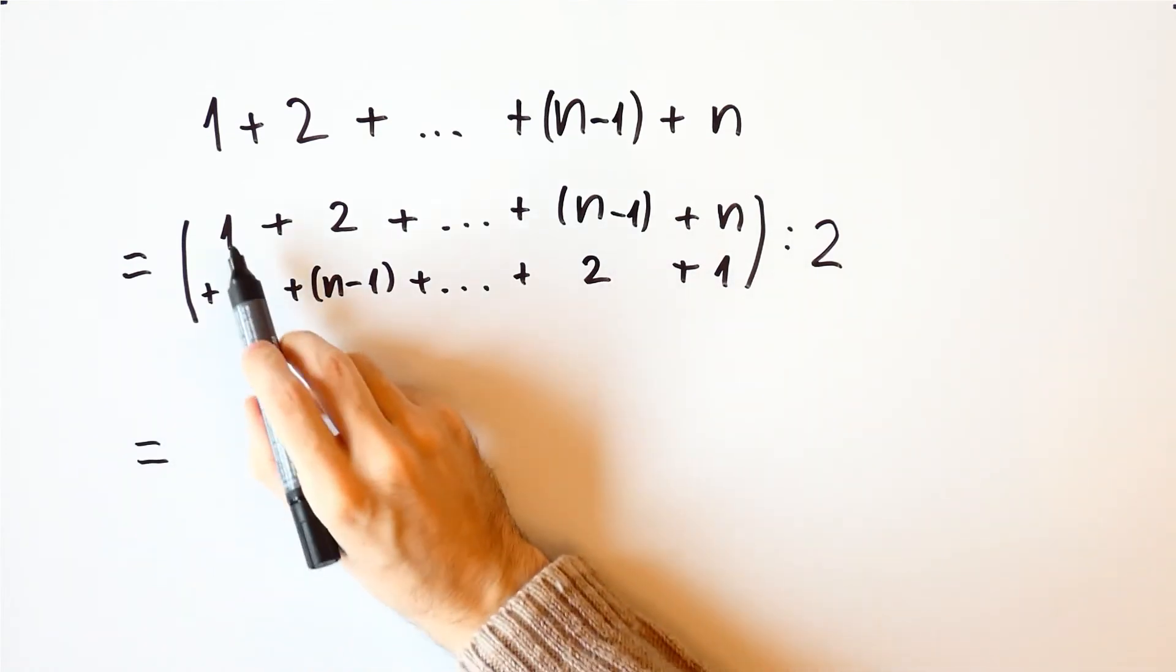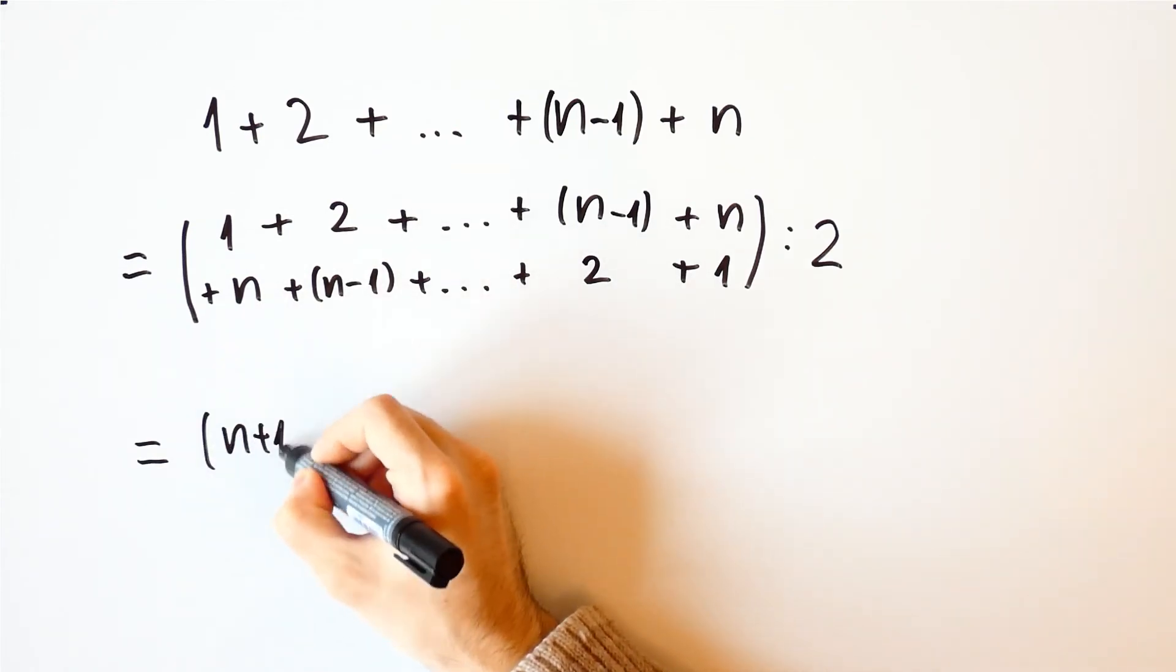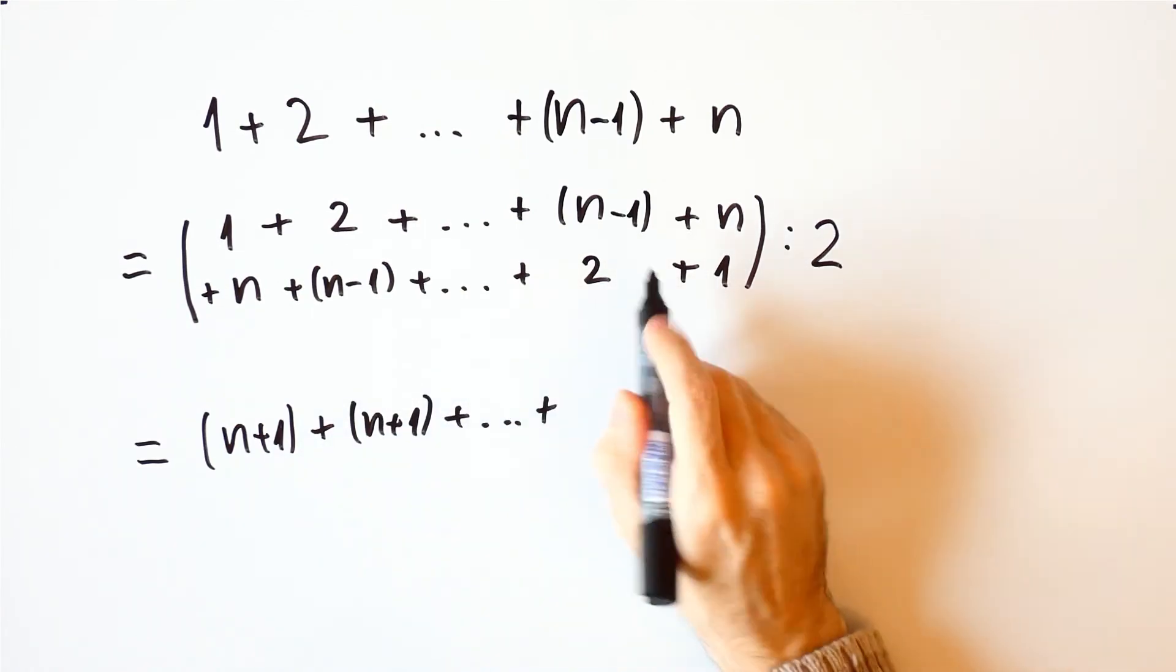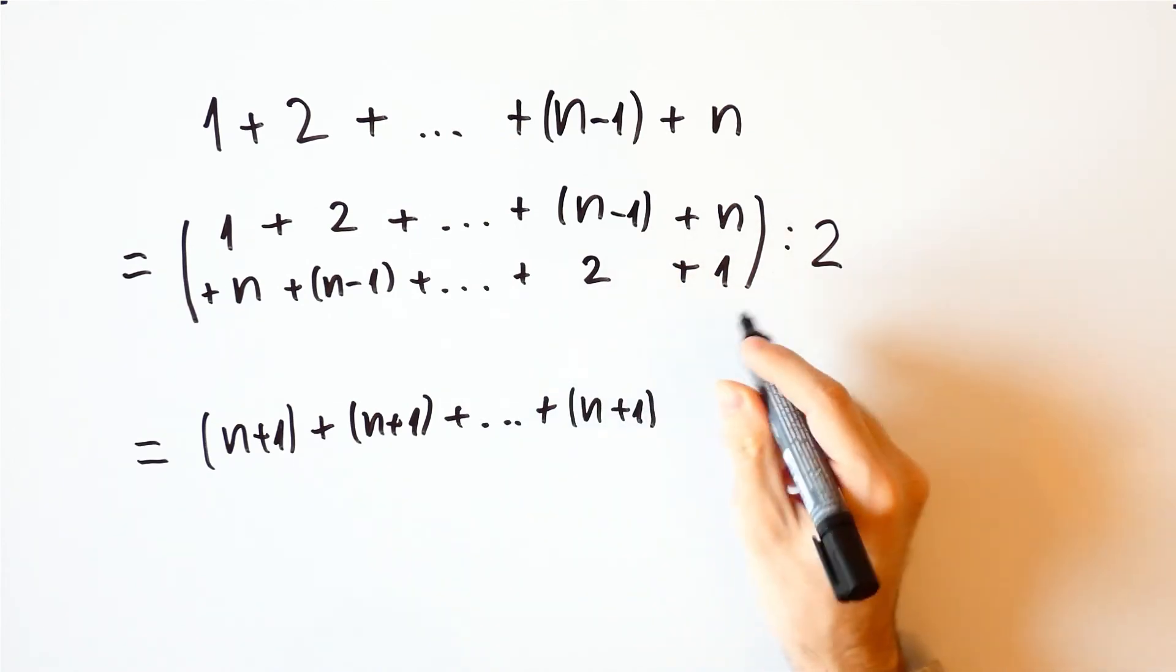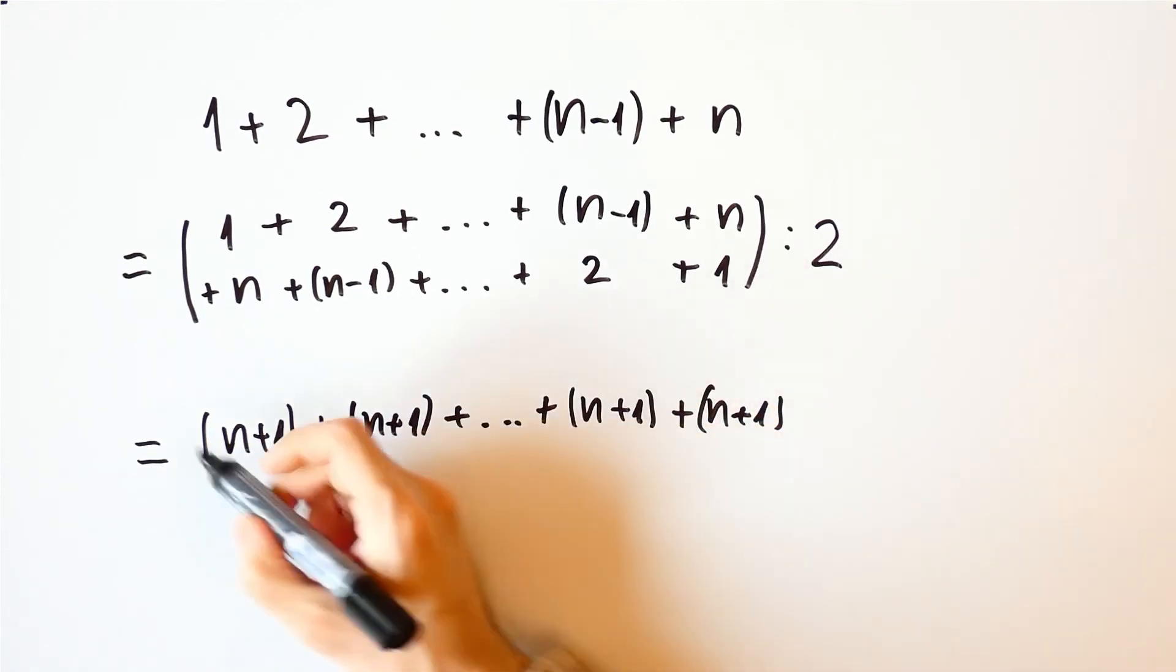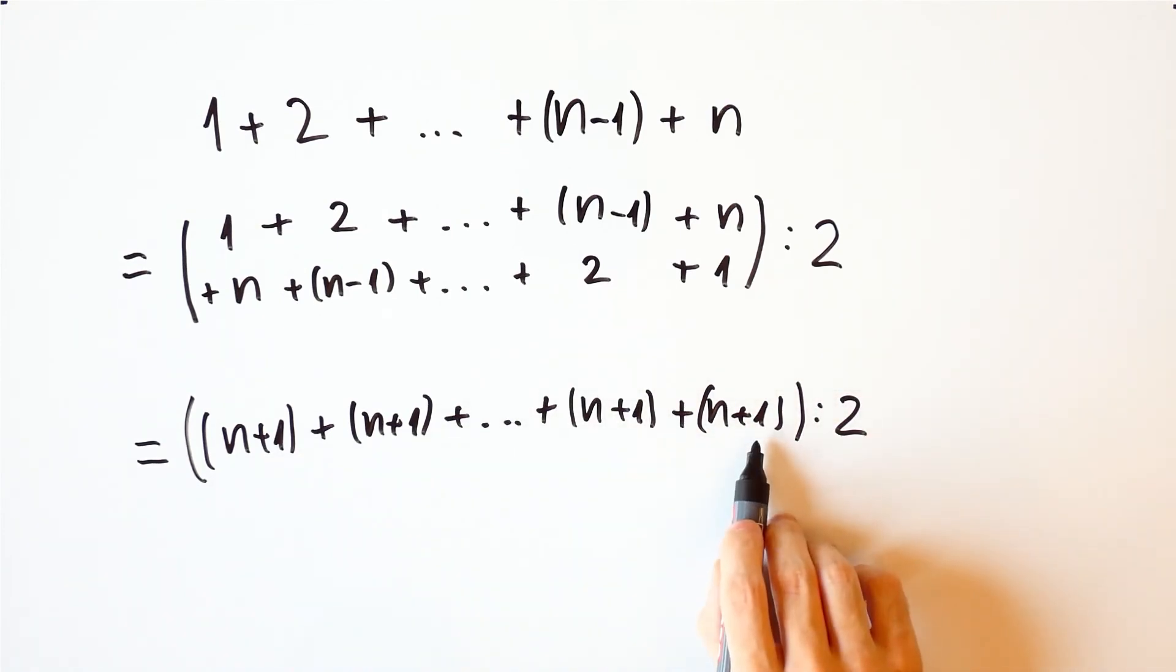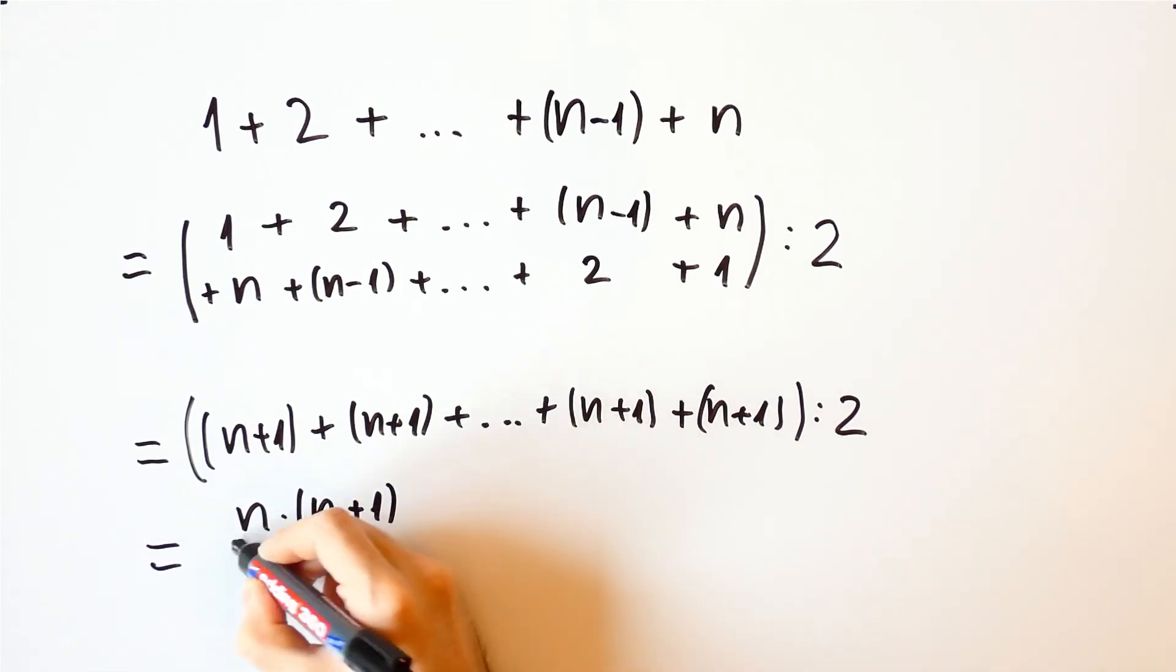Now this is equal to 1 plus n, which is n plus 1, plus 2 plus n minus 1, which is also n plus 1. Over here we have n minus 1 plus 2, which is n plus 1, and n plus 1. And we need to divide this sum by 2. But here we have n times n plus 1, so this is equal to n times n plus 1 over 2.